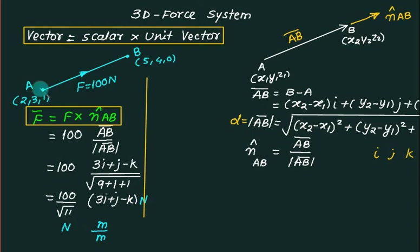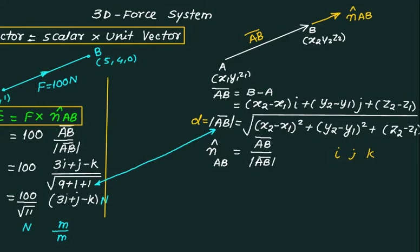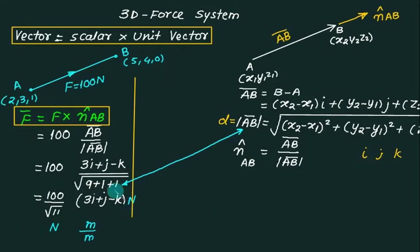Take note: the distance between A and B is given by the formula mod of AB bar — these are one and the same. The quantity 100 divided by root 11 has the unit Newton per meter. This quantity (100/root 11) is called the force multiplier, represented by the symbol Fm.